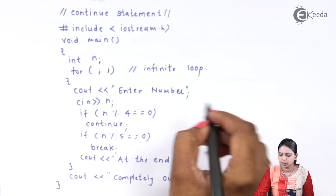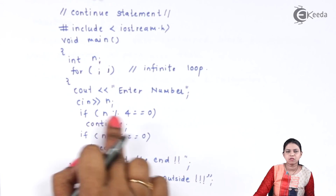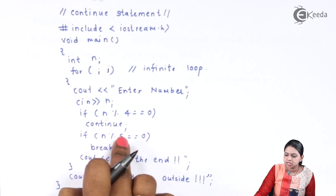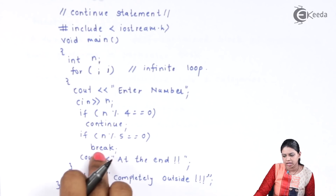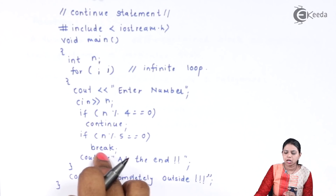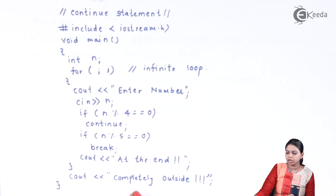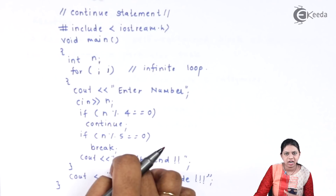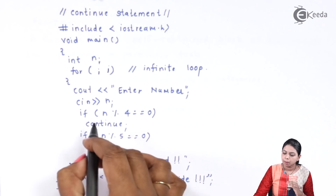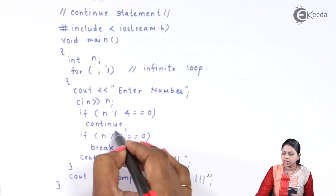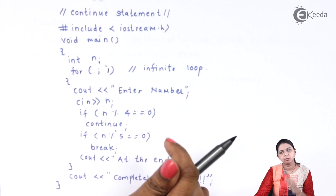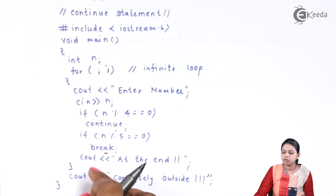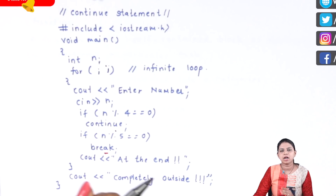Suppose the user enters 5. Then 5 is not divisible by 4, so you go to the next statement and check whether 5 is divisible by 5 — yes it is — and then break executes. Once break occurs, you come directly out of the loop. But whenever continue occurs, whatever is written after it doesn't execute and control goes back to the beginning of the loop, allowing another value of n to be entered. When break occurs, it directly exits the loop and doesn't allow another value to be entered.